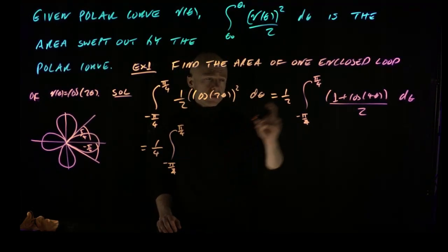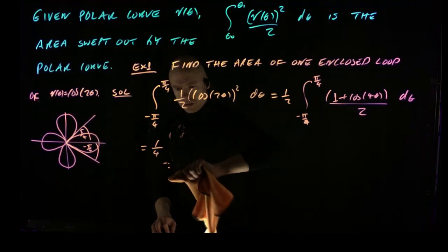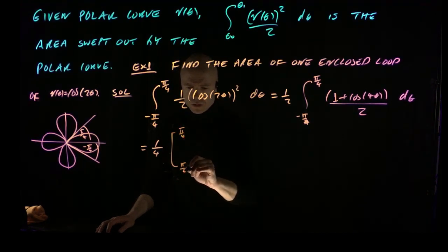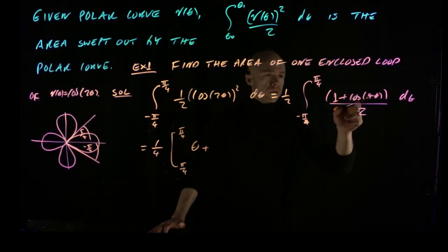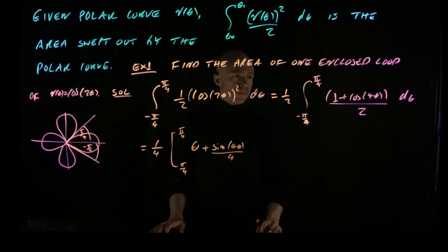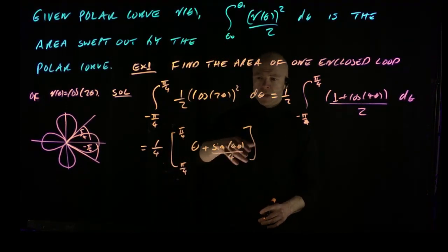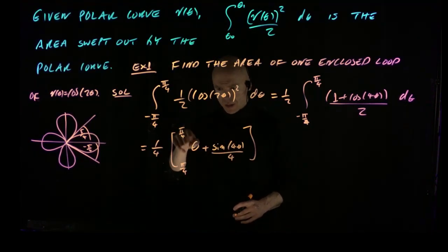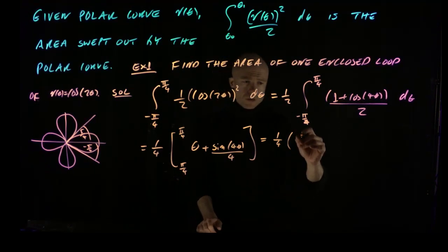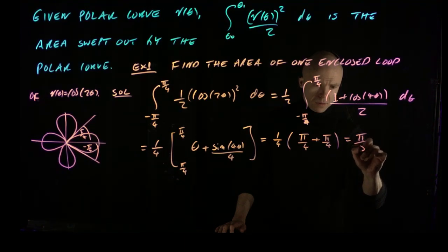We go directly to the antiderivative. The antiderivative of 1 is θ, and to get cosine(4θ) we have sin(4θ)/4. When we plug in ±π/4, the sine terms vanish because sin(π) = sin(−π) = 0. So we're left with (1/4) × (π/4 − (−π/4)) = (1/4)(π/2) = π/8.